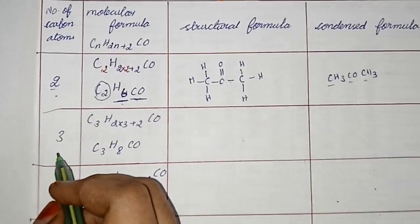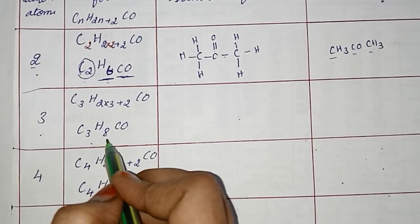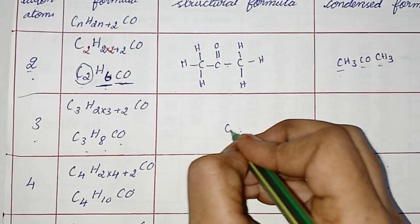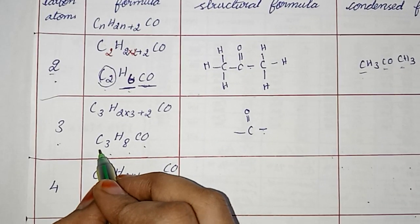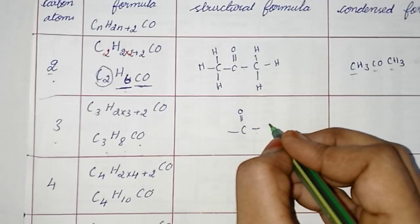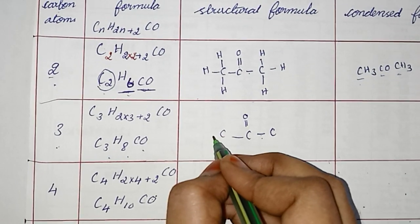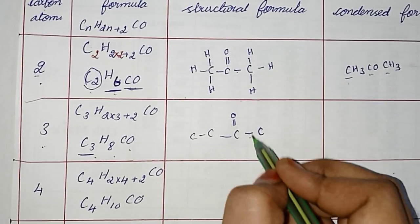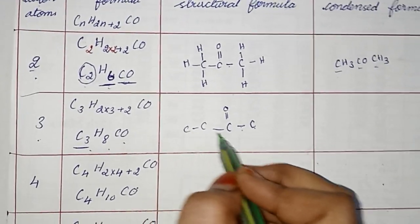Next, number of carbon atoms is 3. Substituting N=3 in the general formula, we get C3H8CO. First step: write the functional group — this is the structure. Next, there are 3 carbon atoms; you must write 1 carbon on one linking side, and place the remaining carbon atoms on the other linking side.